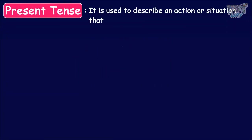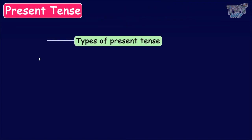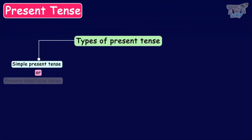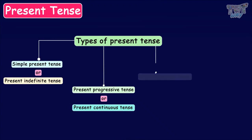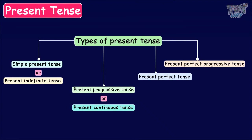The present tense is used to describe an action or situation that is happening at the moment. We also learnt that present tense is further divided into four types: simple present tense or present indefinite tense, present progressive or continuous tense, present perfect tense, and present perfect progressive tense.